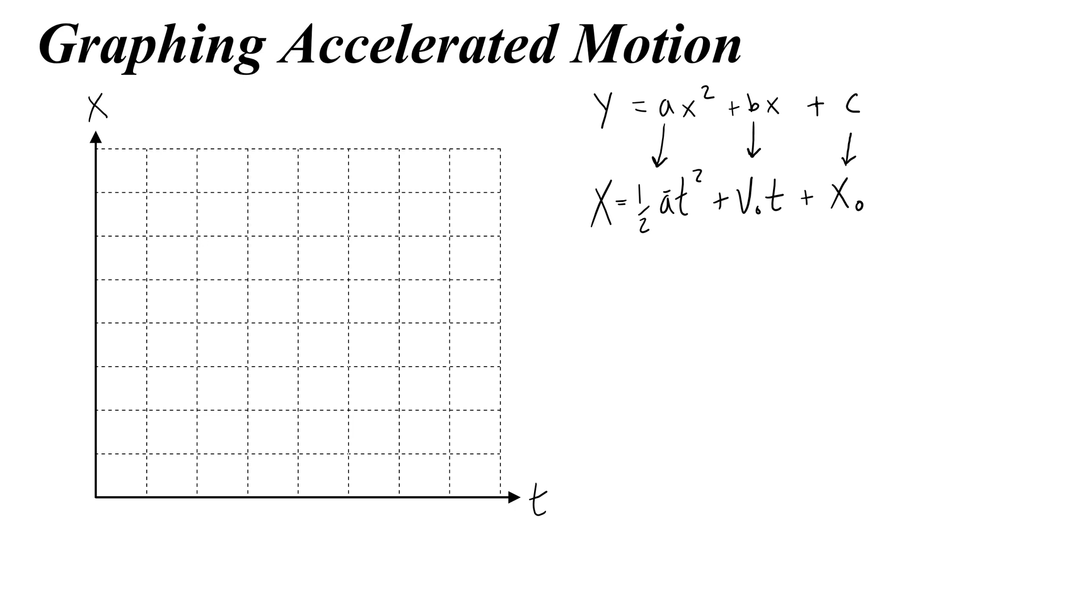Let's say that you had an initial position of 4, an initial velocity of negative 2, and an acceleration of positive 3.